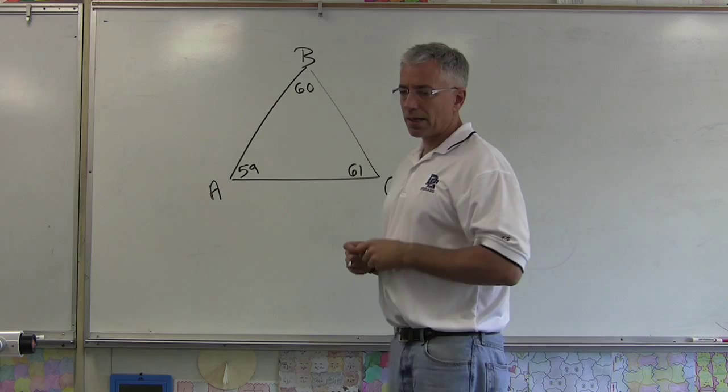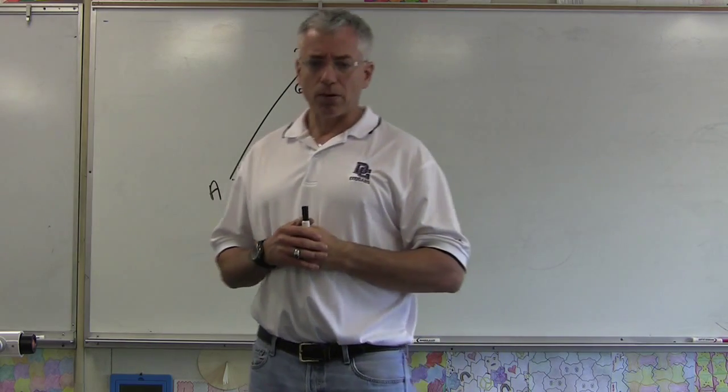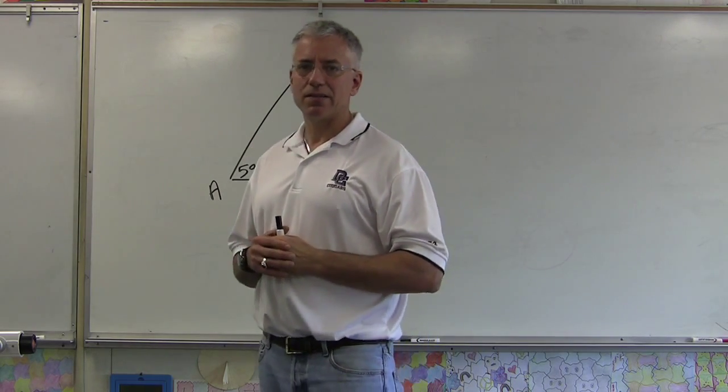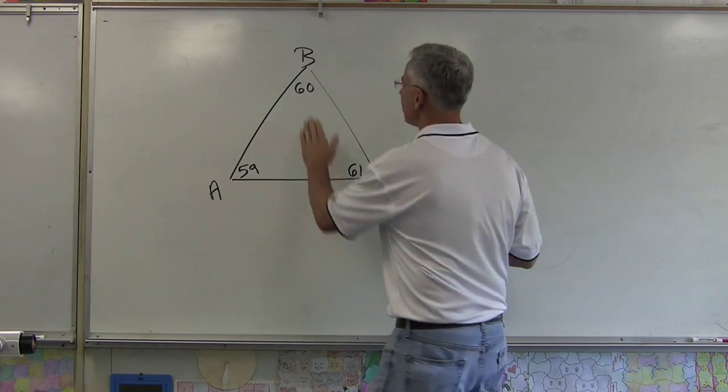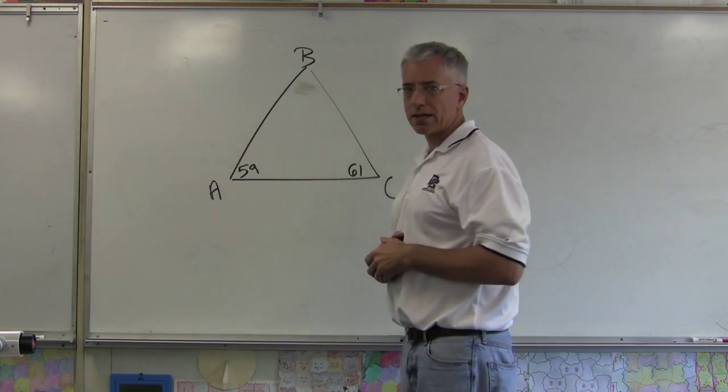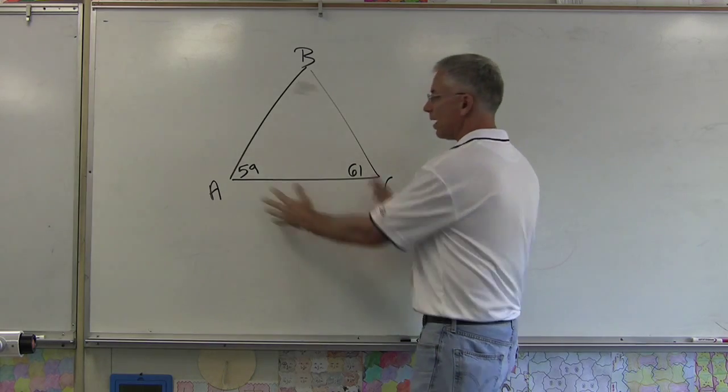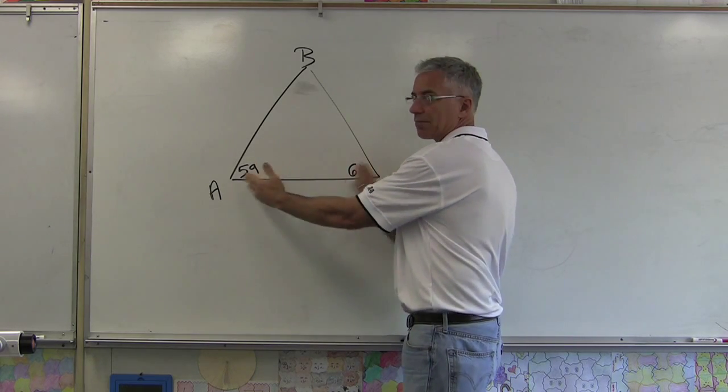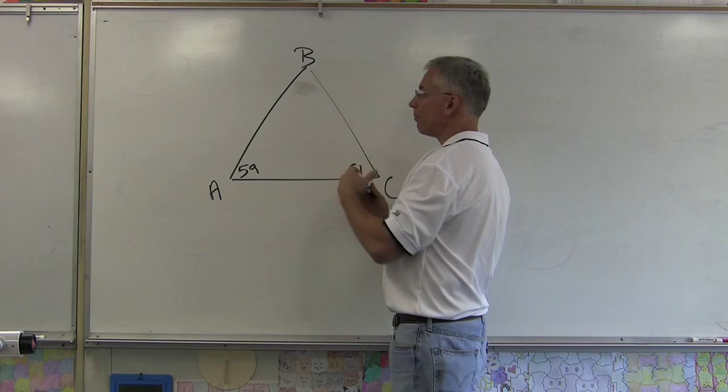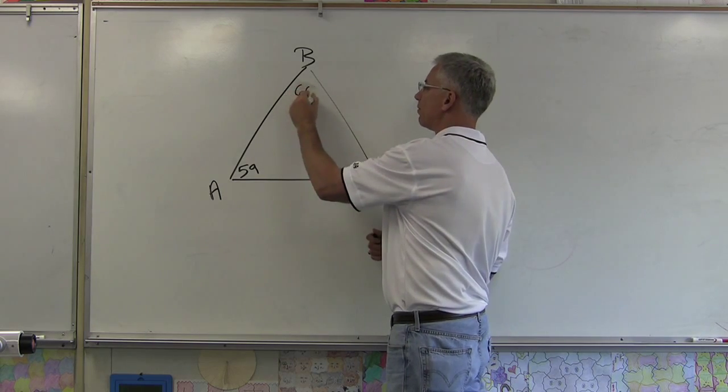They could ask you something like 'list the order of the sides from least to greatest,' or they might not even put this 60 in there—you'll have to figure that out because it adds up to 180. So you'd have to add these guys up and figure they add up to 120, take that off of 180, and figure that this guy equals 60.